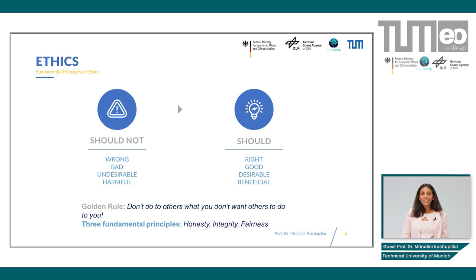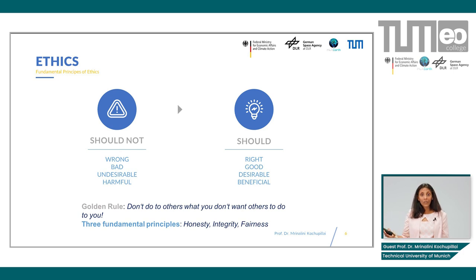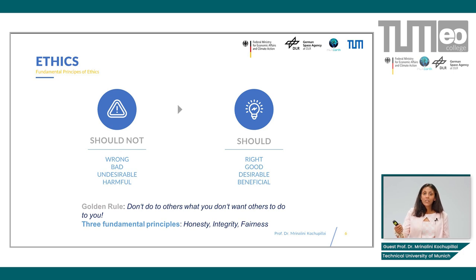What was your answer? Perhaps your answer was that ethics is just about right and wrong — and you are right. Ethics is about distinguishing between right and wrong, distinguishing between good and bad, between what is an ought and what is an ought not. Beyond these very broad ideas, there is a concrete golden rule of ethics that applies across the globe, across all cultures.